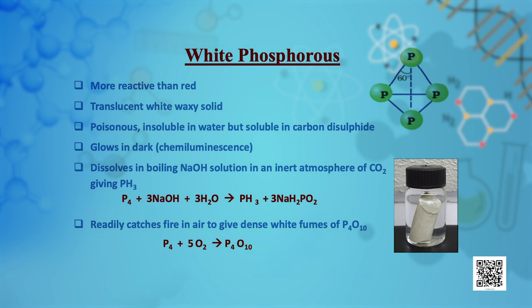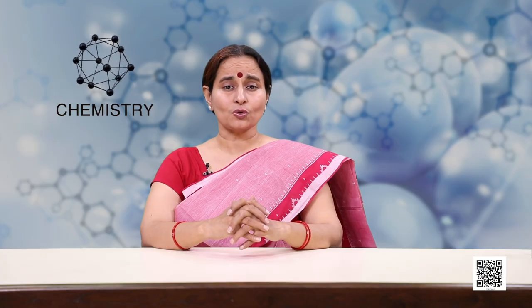White phosphorus is a translucent white waxy solid. It is poisonous, insoluble in water, but soluble in carbon disulfide. White phosphorus glows in the dark — this is called chemiluminescence. It dissolves in boiling sodium hydroxide solution in an inert atmosphere of carbon dioxide, giving phosphine (PH3). It readily catches fire in air to give dense white fumes of P4O10.